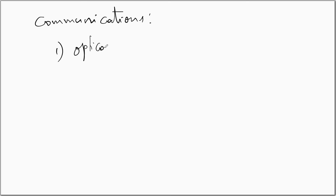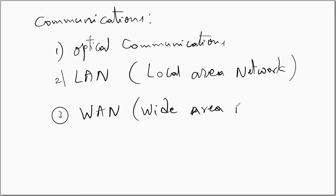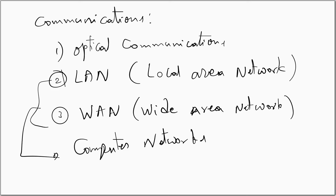The second category is communications. Optical fibers are extensively used in optical communications or fiber optic communications. They are used in LAN (local area network) and WAN (wide area network), which correspond to computer networks. If the separation between computers is small, it is called a local area network; if the separation is quite large, it is called a wide area network. A computer network essentially connects different computers using a communication medium — in this case, optical fibers.